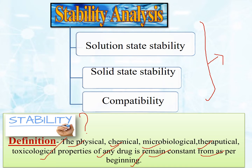In other words, for any drug substance, all physical, chemical, microbiological, therapeutic, and toxicological properties should remain the same and constant from when it was manufactured to when it is being stored. There should be no variation in physical appearance, chemical degradation, microbial attack, or difference in therapeutic effect. That is stability in actual sense.